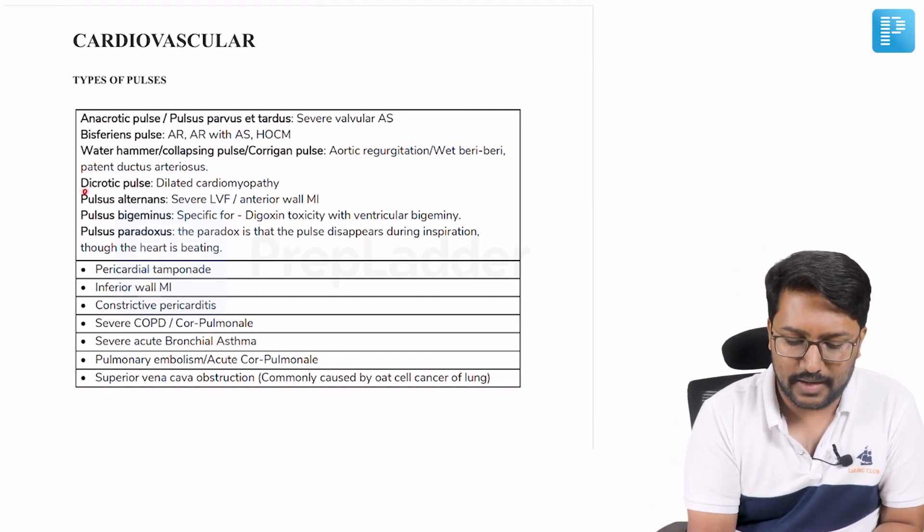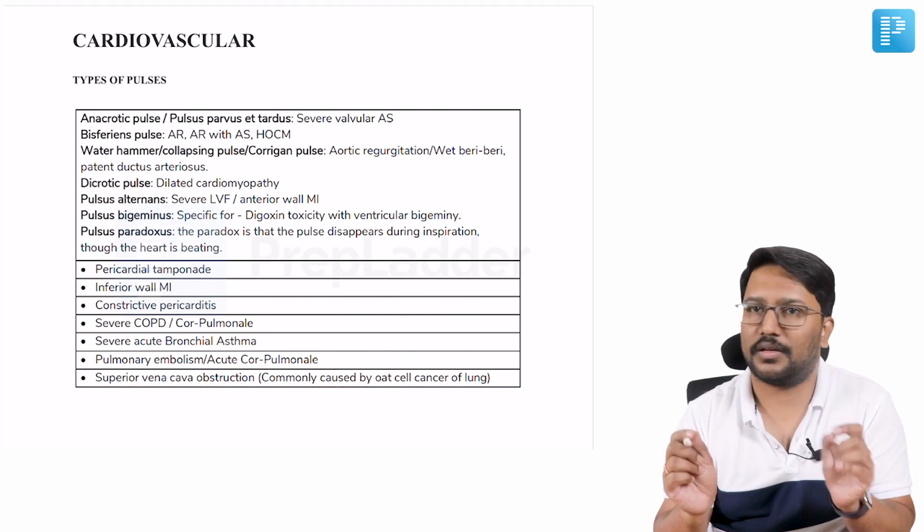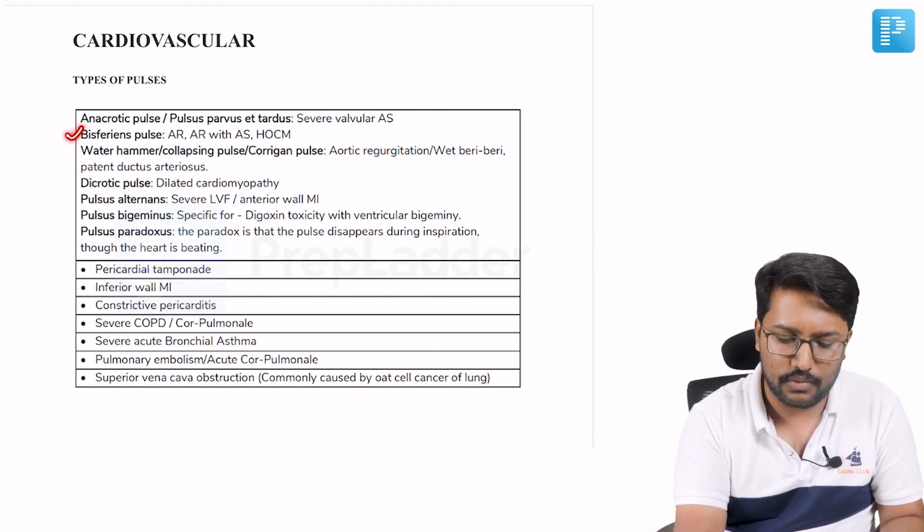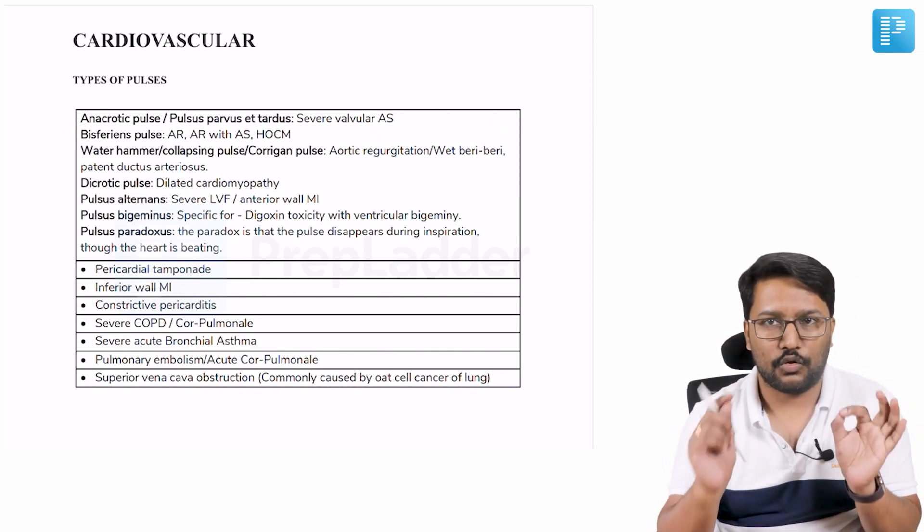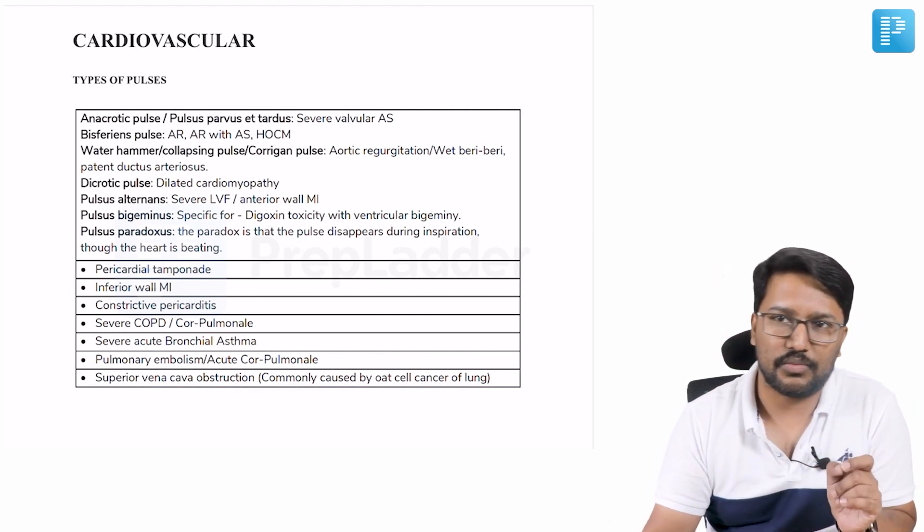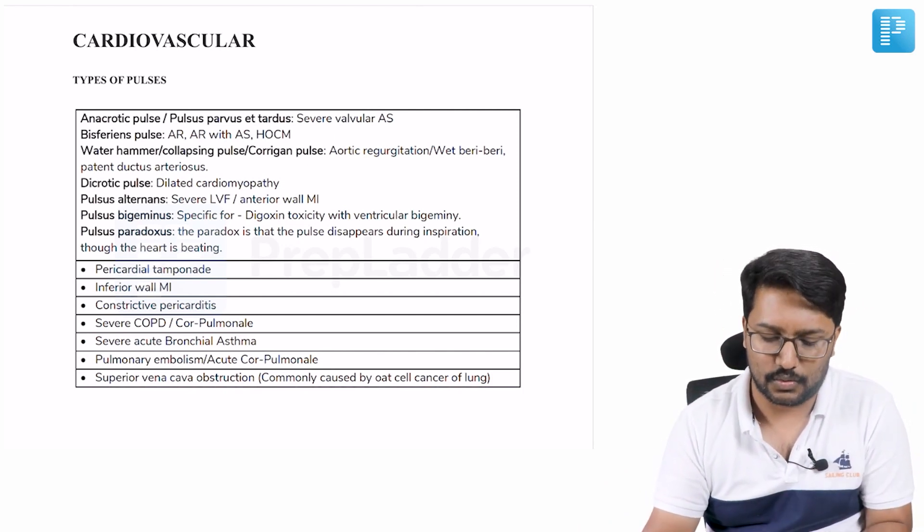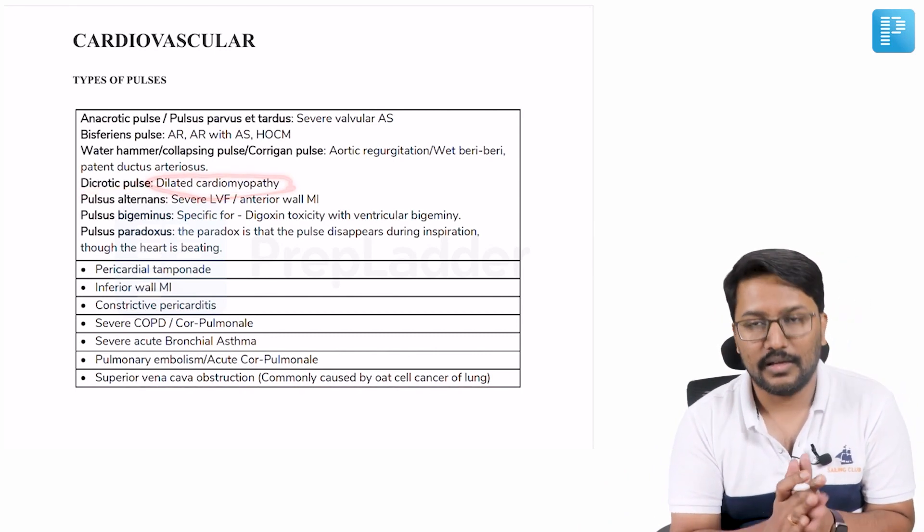Then we have dicrotic pulse. Dicrotic pulse is where you have two peaks, but not both peaks appearing in systole. Like in bisferiens, you have two peaks, both peaks appearing in systole. In dicrotic, there are two peaks: one in systole, the other one is in diastole. Clearly appreciable peaks, one in systole, one in diastole. That's what we call dicrotic pulse, and that is typically seen in dilated cardiomyopathy.